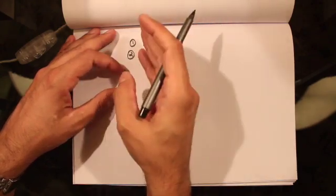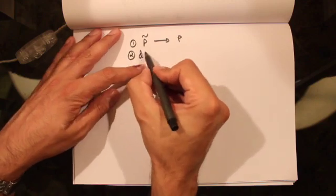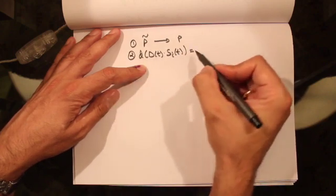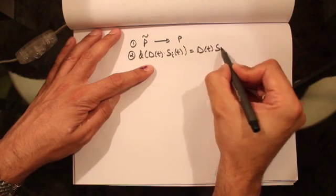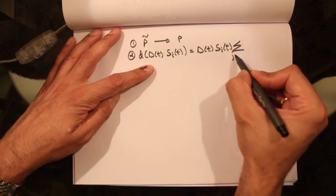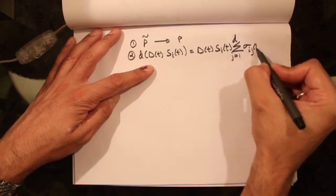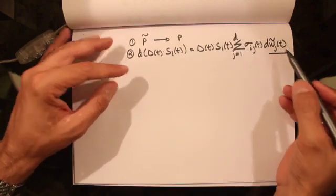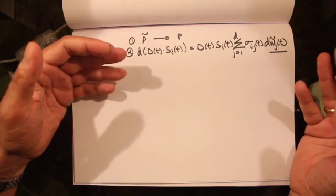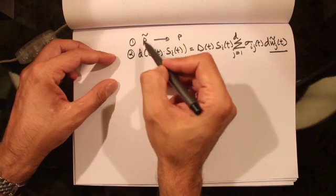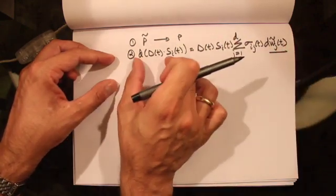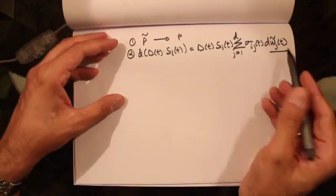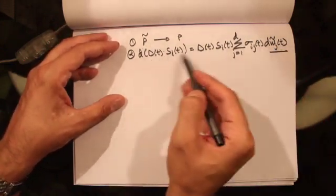We saw what the differential of the discounted value of the stock process was in the previous lecture. It was given by d of D(T) S_i(T), which is the discounted value of the stock process, and that was given by D(T) S_i(T) times the summation J equals 1 to D of sigma_ij(T) dW-tilde_j(T), where W-tilde is a D-dimensional Brownian motion under probability measure P-tilde.